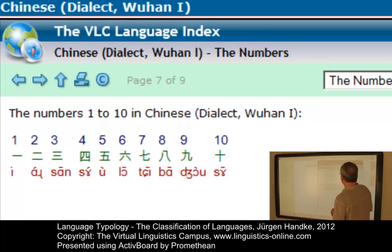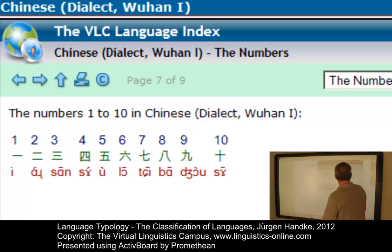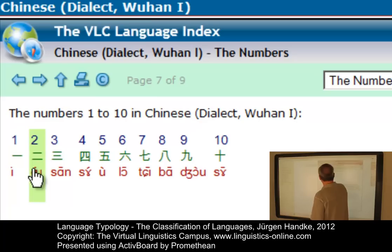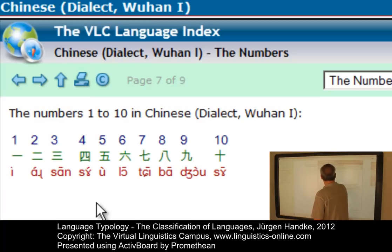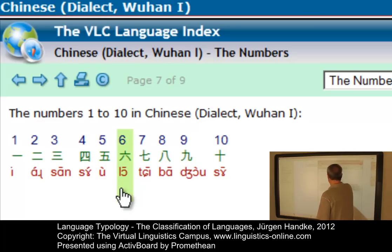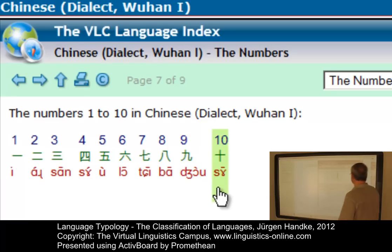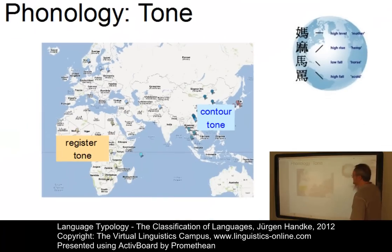Let us listen to some Chinese tones to illustrate this effect. Here are the numbers 1 to 10 in Chinese taken from a dialect spoken in Wuhan. Listening to the tones: 1 — a level tone; rising; level; rising; rising; falling; level; falling; level; level; falling; and level again. This should suffice to illustrate the tones in Chinese.